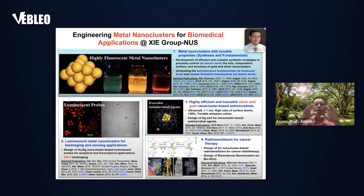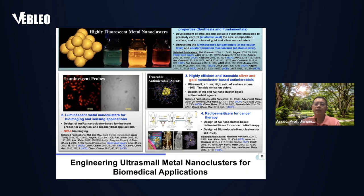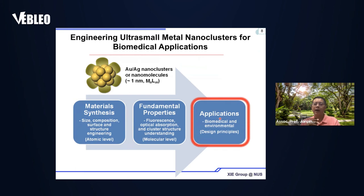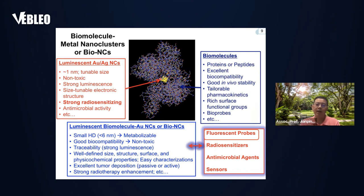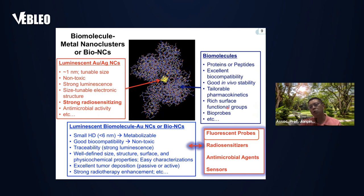Due to time limits, in this presentation we will just give a very brief overview of the applications — a short discussion or introduction of the design principles for using ultra-small meta-nanoclusters for biomedical applications. For bio-nanoclusters, where the cluster is protected by biomolecules, it is more like a biomolecule carrying a certain number of clusters. They should have very good biocompatibility and can be useful as fluorescence probes for bioimaging applications.